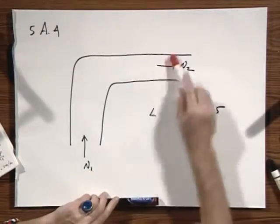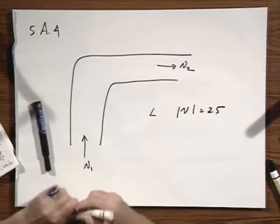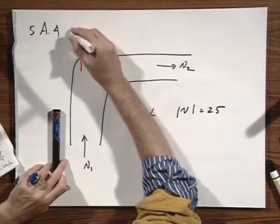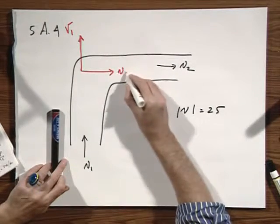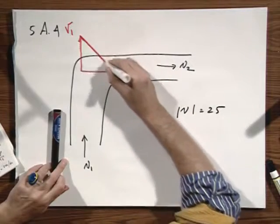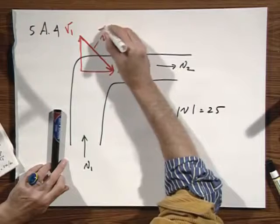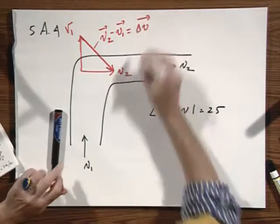Now the velocity is changing from this to this. The speed is not changing but the velocity is changing. So if this is V1 and this is V2, then the change in velocity is V2 minus V1, and let's call that for simplicity delta V.